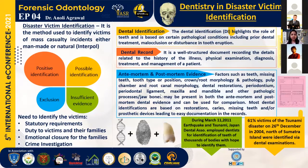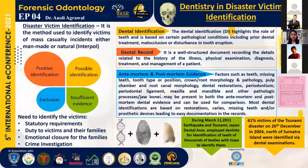I would firstly begin with what is Disaster Victim Identification. According to Interpol, DVI is the method used to identify victims of mass casualties — incidents either man-made, for example bomb blasts or terrorist attacks, or natural, like tsunamis, cyclones, earthquakes, etc.